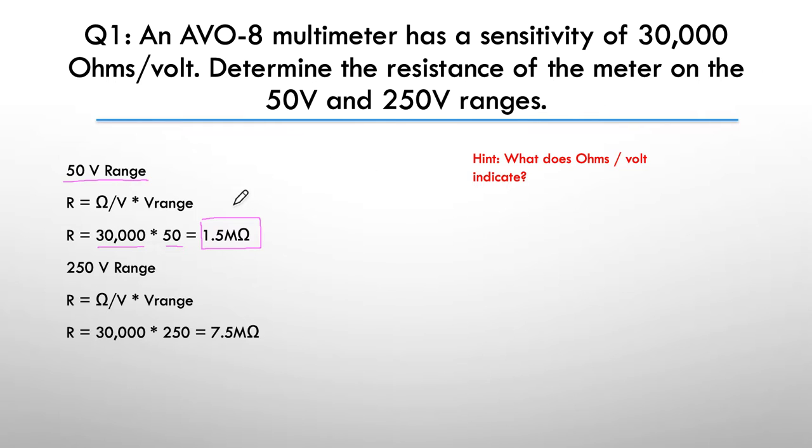Repeat the process now for the 250 volt range. We have 30,000 times 250 this time, and the answer we get is 7.5 megaohms.